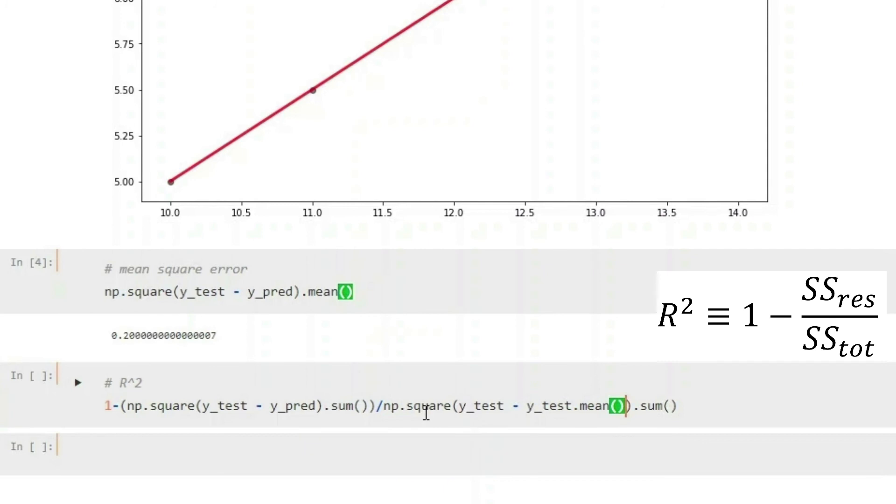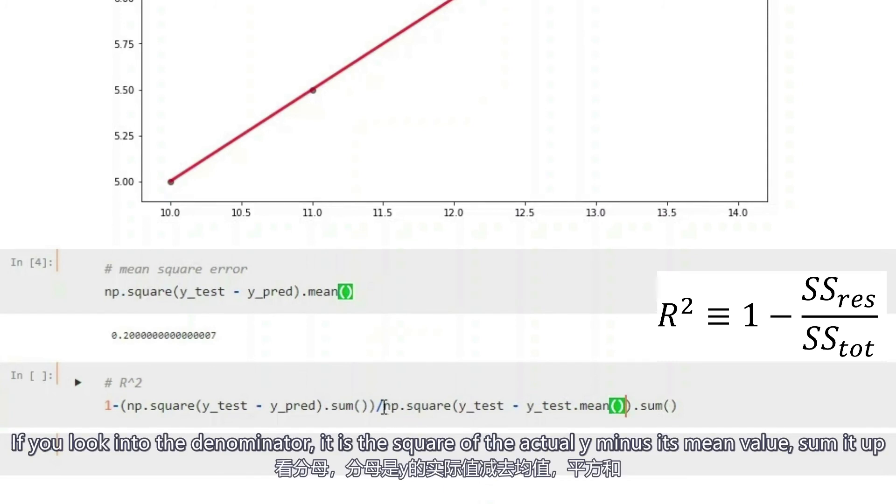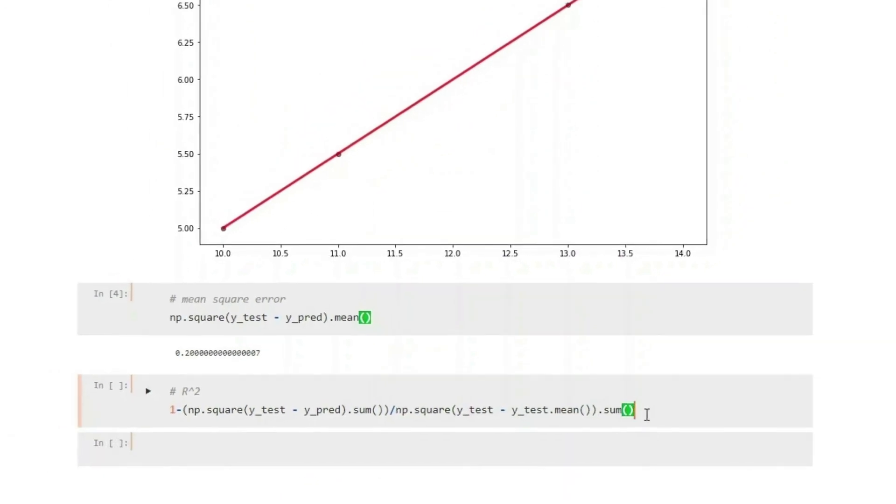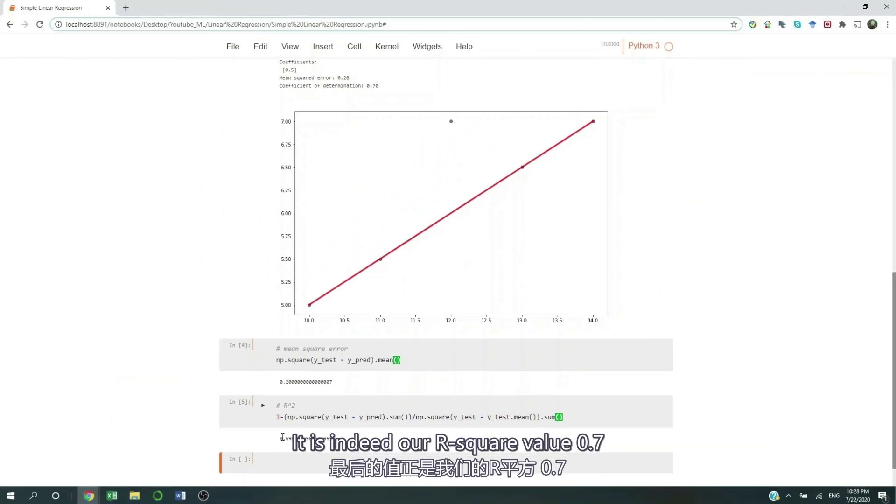Take the square of it, and then you sum it. And if you look into the denominator, it's just the square of the actual y minus its mean value. Sum it up. And if you run this, 0.7. It is indeed our r squared value.